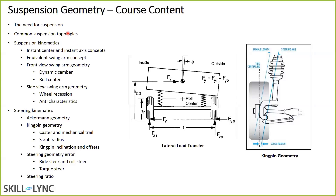In the geometric part — suspension kinematics — we learn about instant center and instant axis concepts: front view instant center and side view instant center. The instant center defines what's known as a swing arm. Looking from the front of the vehicle, we study roll center height and dynamic camber change. Looking from the side, we'll learn about wheel recession, anti-dive, anti-lift, and anti-squat characteristics.